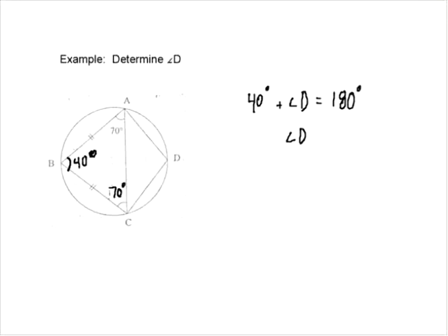That tells us that angle D must equal 180 degrees minus 40 degrees, which, of course, is just 140 degrees. So, fairly straightforward once we recognize that something is a cyclic quadrilateral.